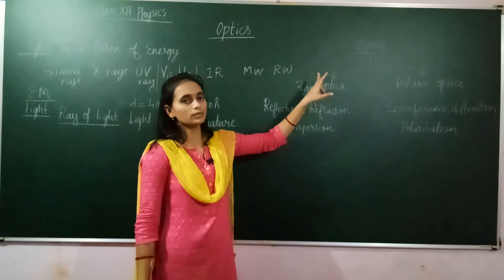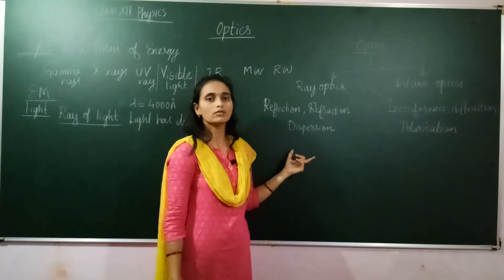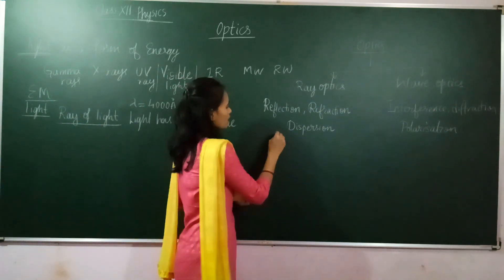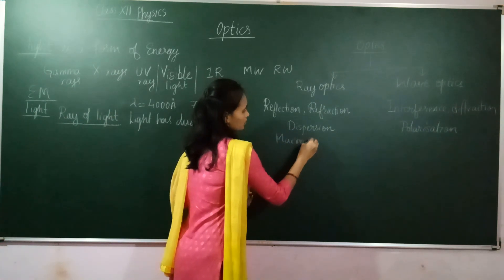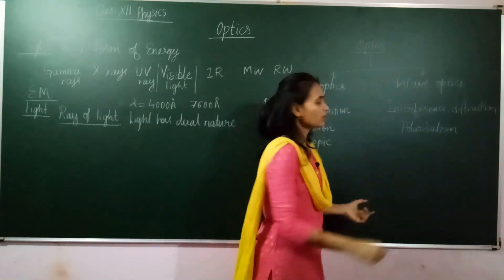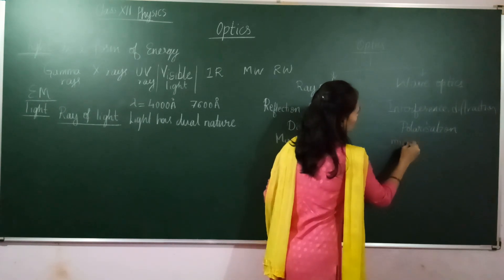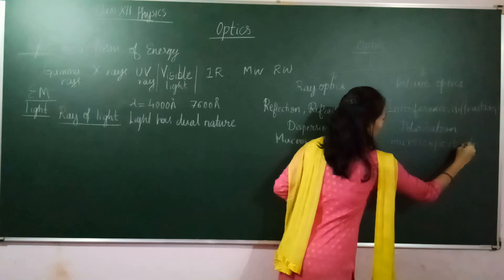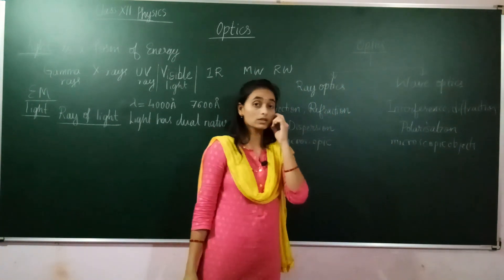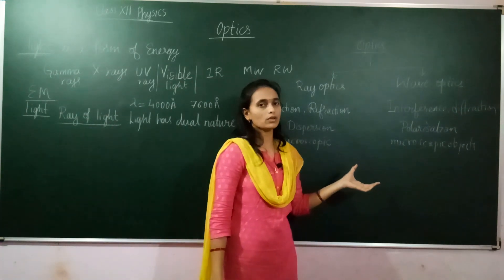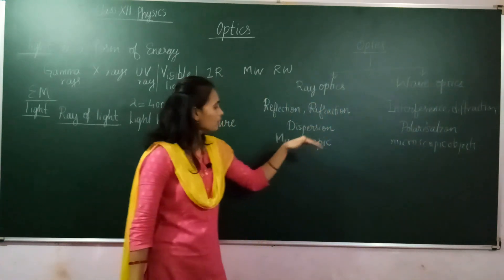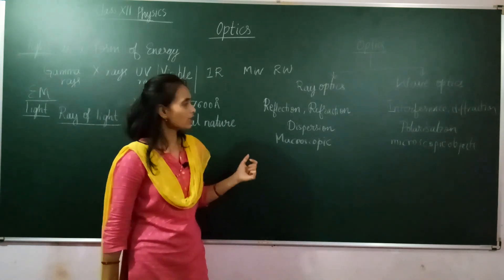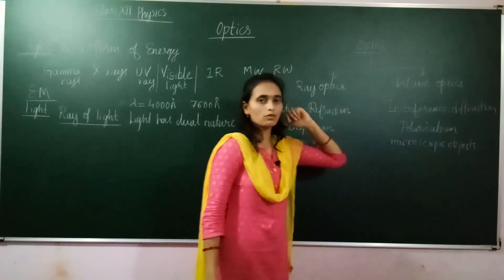Another basic difference between ray optics and wave optics is the scale of objects involved. In ray optics, we deal with macroscopic objects — objects whose dimensions are much larger compared to the wavelength of light. In wave optics, we deal with microscopic objects at the quantum level, where the dimension of the object is comparable to the wavelength of light.